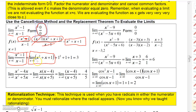Now evaluate the limit of x²+x+1 as x approaches 1: 1²+1+1 = 3. You might remember from earlier when we looked at the graph and table that this function was getting closer and closer to 3 as x got closer and closer to 1.